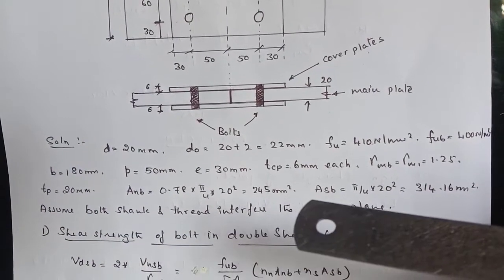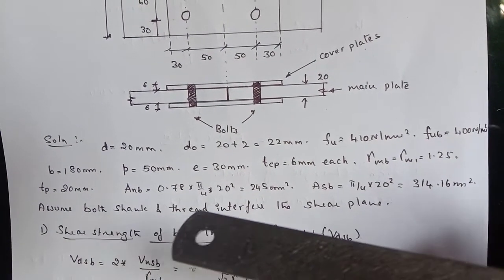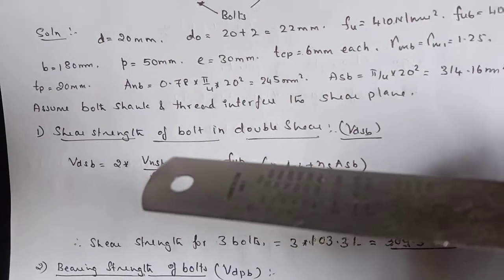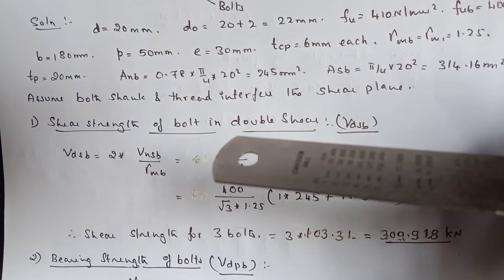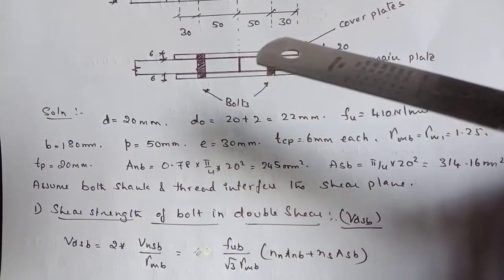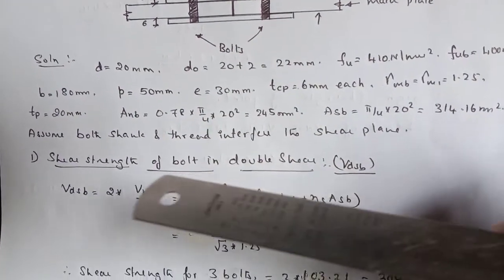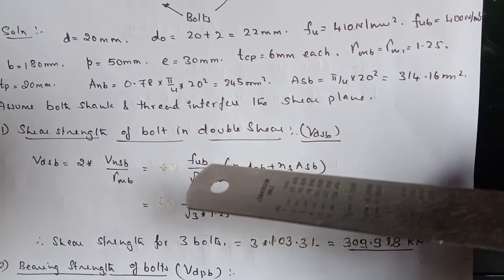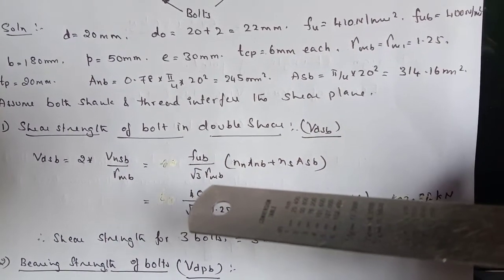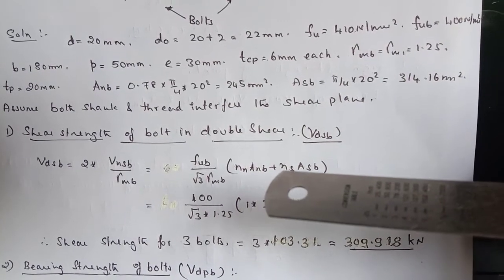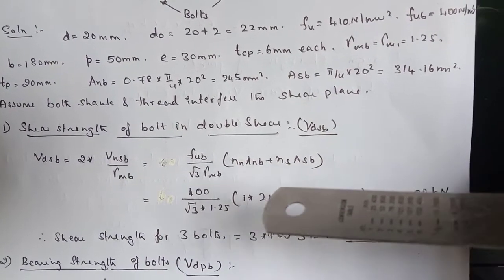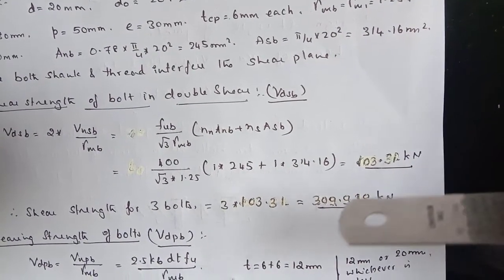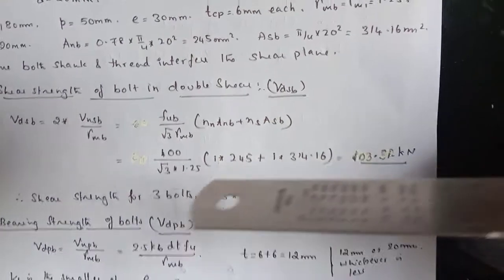ANB and ASB we have calculated by assuming both shank and thread interfere the shear plane. So first of all, to find the design shear strength of bolt in double shear by default, this double cover butt joint will be under double shear. So VDSB equal to VNSB by gamma MB. That is FUB divided by root 3 gamma MB, AN into ANB plus NS into ASB. So upon substitution, we get 103.31 kilonewton as the double shear value for single bolt.